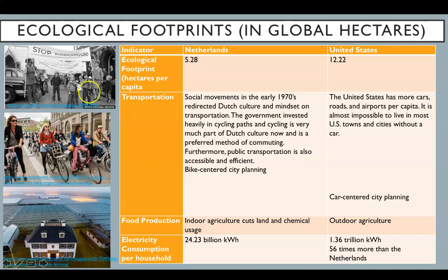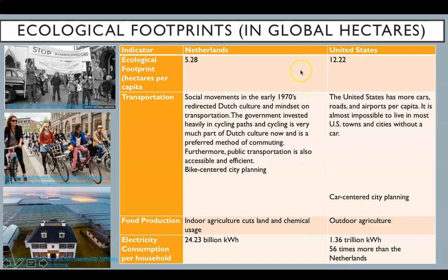Biking is very much a part of Dutch culture and mindset and is often the preferred mode of transportation and commuting. In the U.S., however, it is very difficult to get around in most towns and cities without a car. The Netherlands' bike-centered environmental value system versus the U.S. car-centered environmental value system might contribute to the differences in ecological footprint.